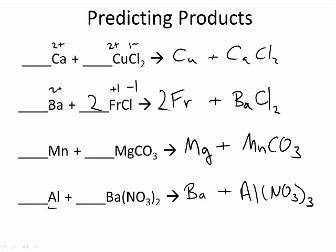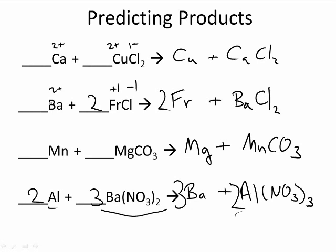Now let's balance and get rid of the superscripts. We'll balance the nitrates using the lowest common multiple — put a 2 here and a 3 here, essentially switching the numbers. That makes 6 nitrates on each side, 2 Al on each side, and 3 Ba on each side. And there we have it balanced. When doing single replacements, get the charges first, then substitute a positive with the other positive.